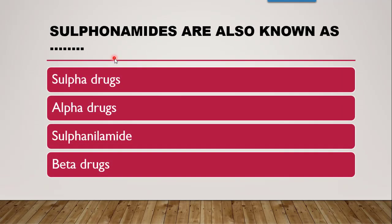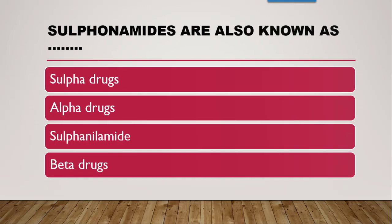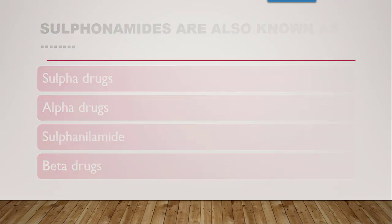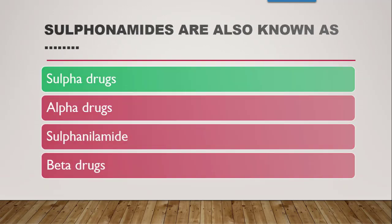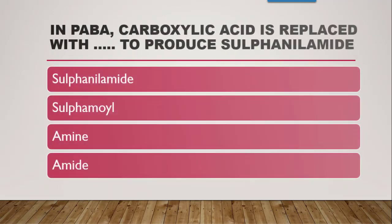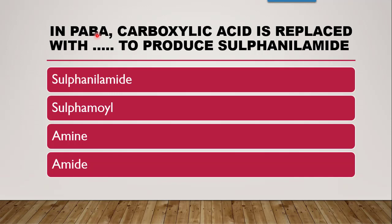Next question: sulfonamides are also known as — sulfa drugs, alpha drugs, sulfanilamide, or beta drugs? The correct answer is sulfa drugs. Sulfonamides are also called sulfa drugs.